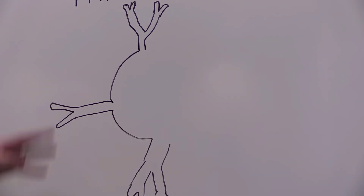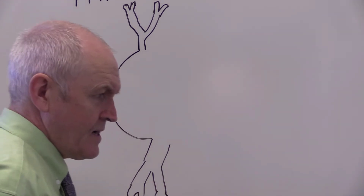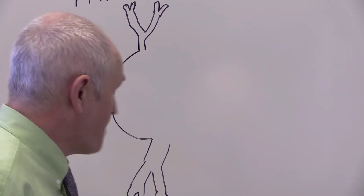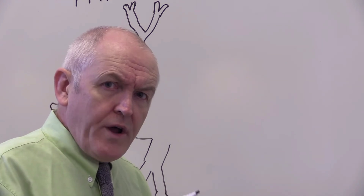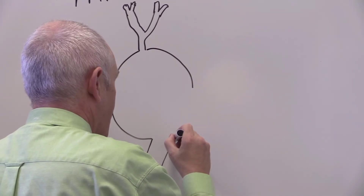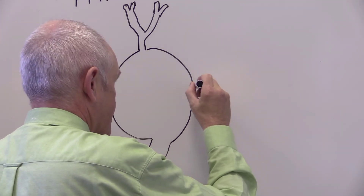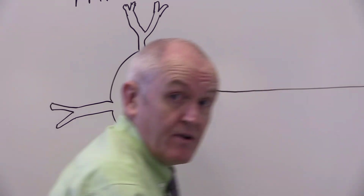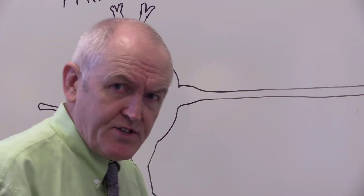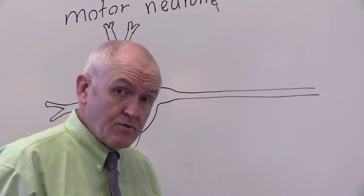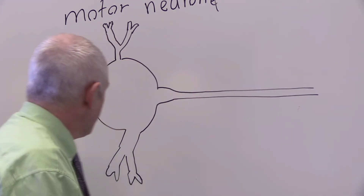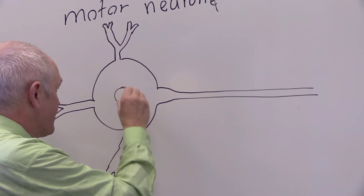The motor neuron, as well as having numerous small branches, also has one long branch projecting from it. This long branch can be very long — for example, some of these branches go from your spinal cord all the way down to your toes, so they could easily be a meter long. This component here is the cell body, which has a nucleus.